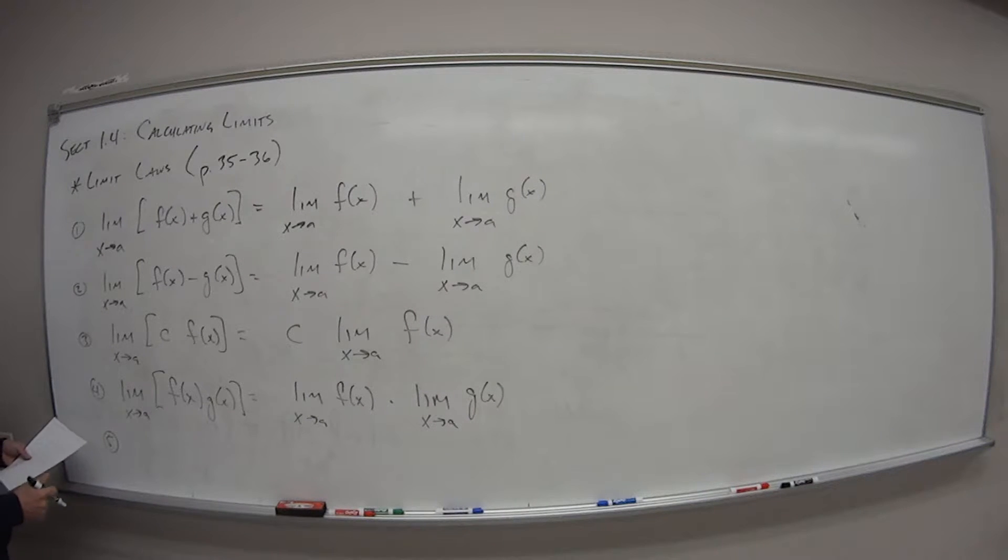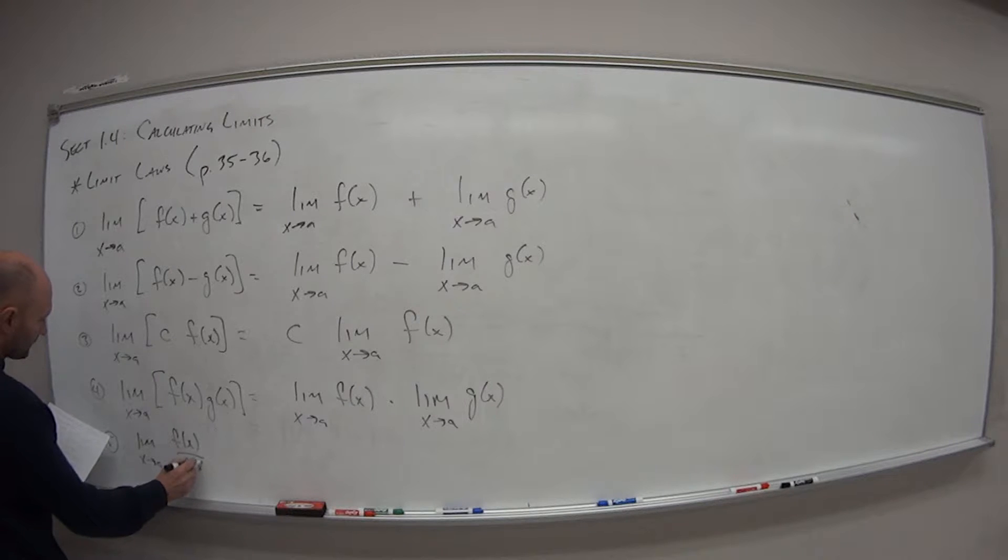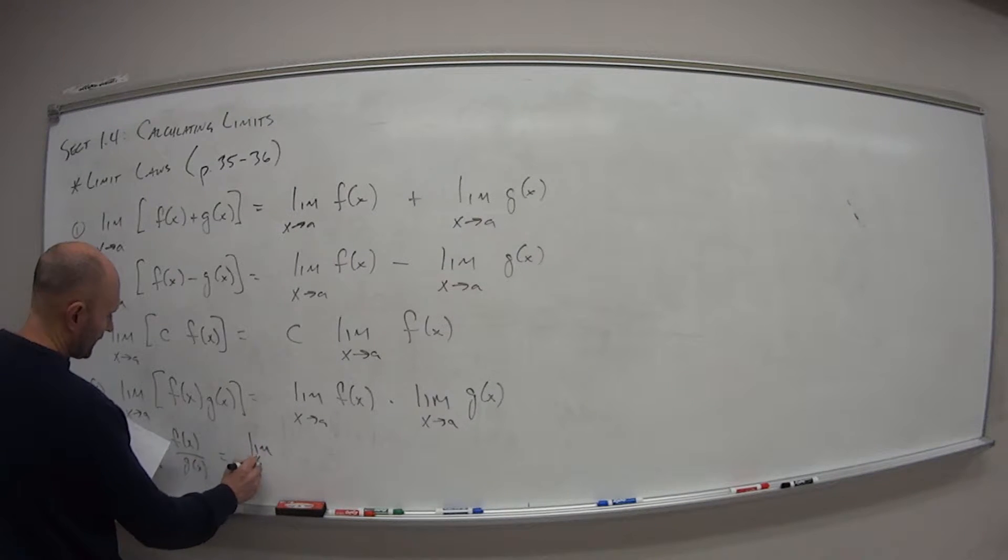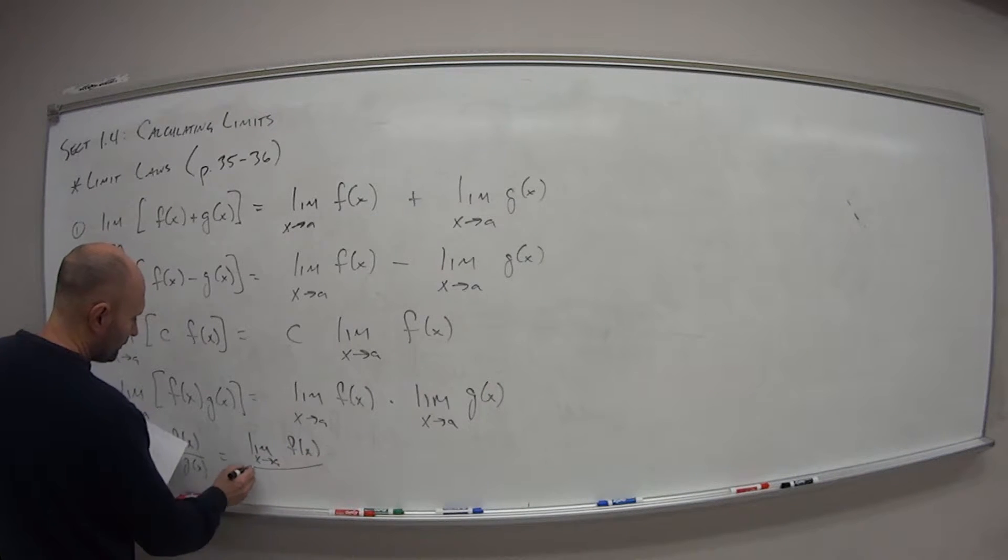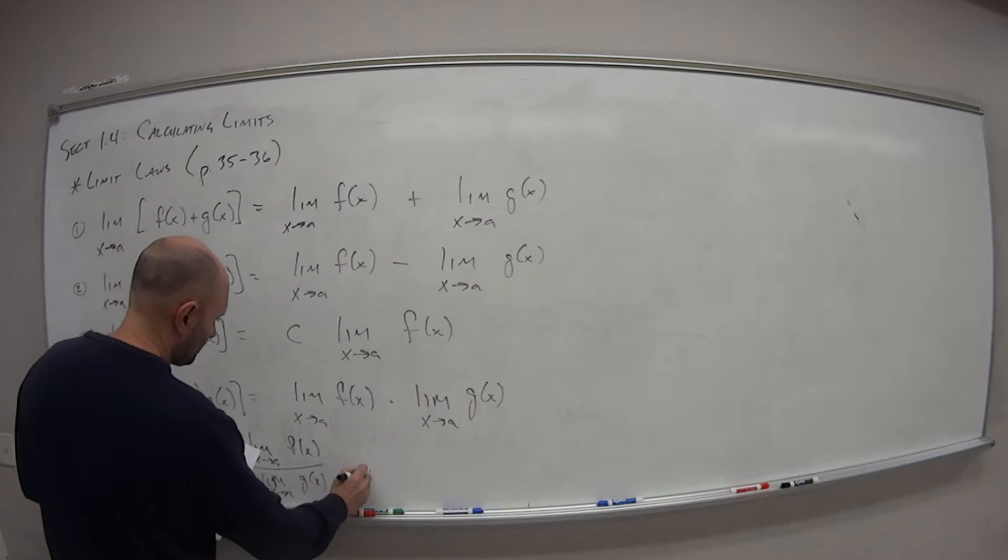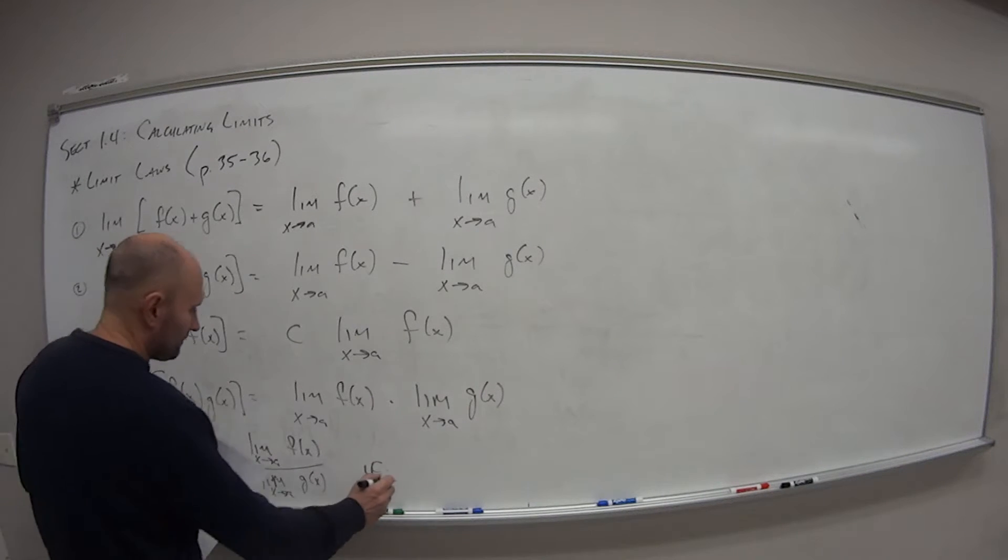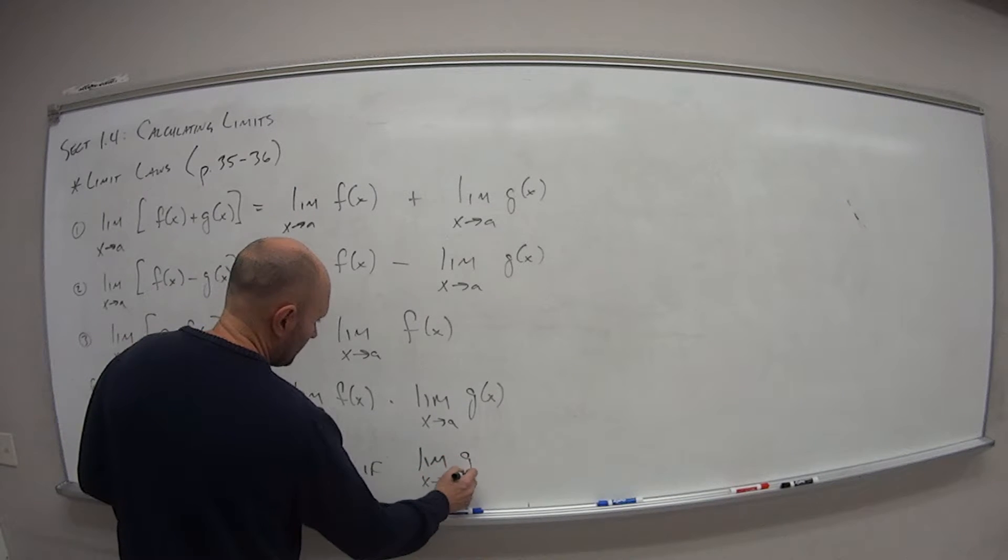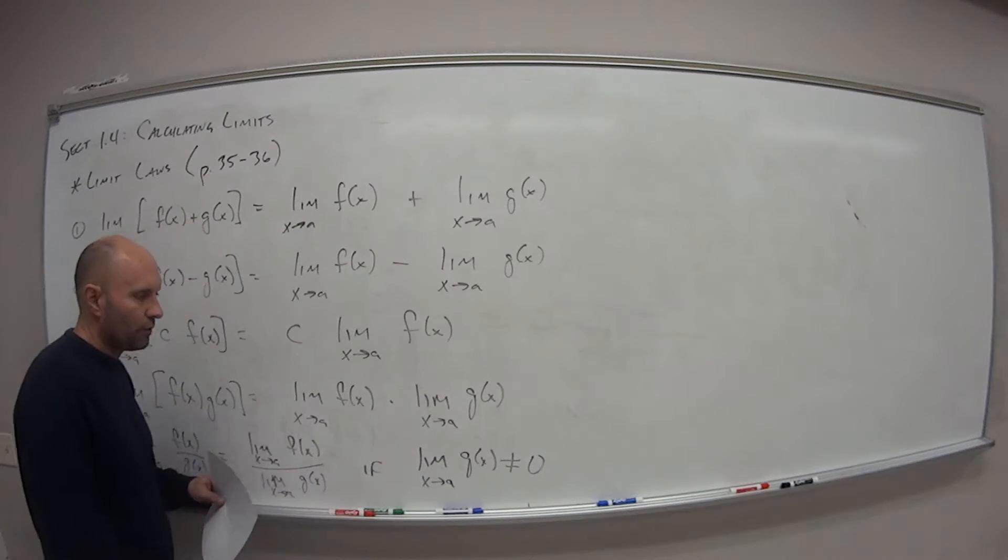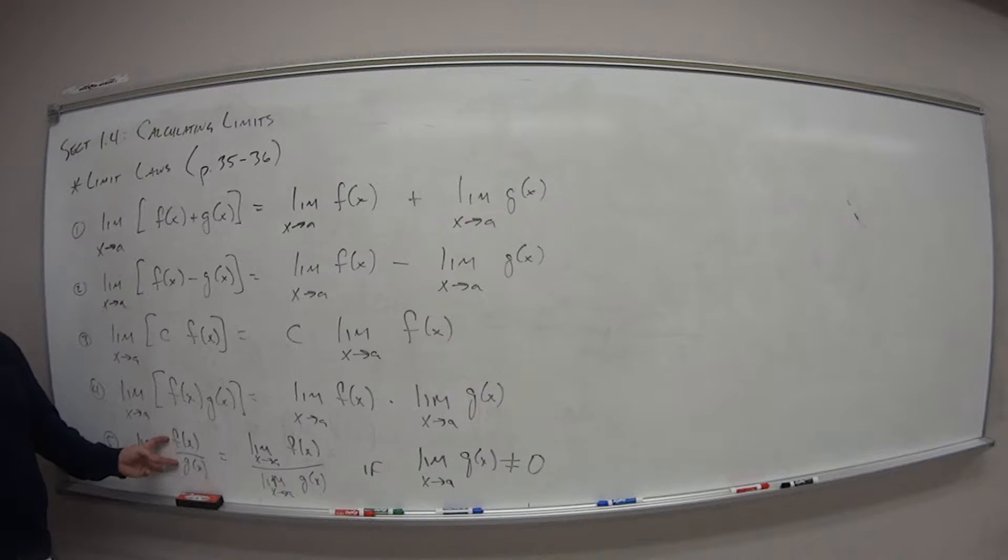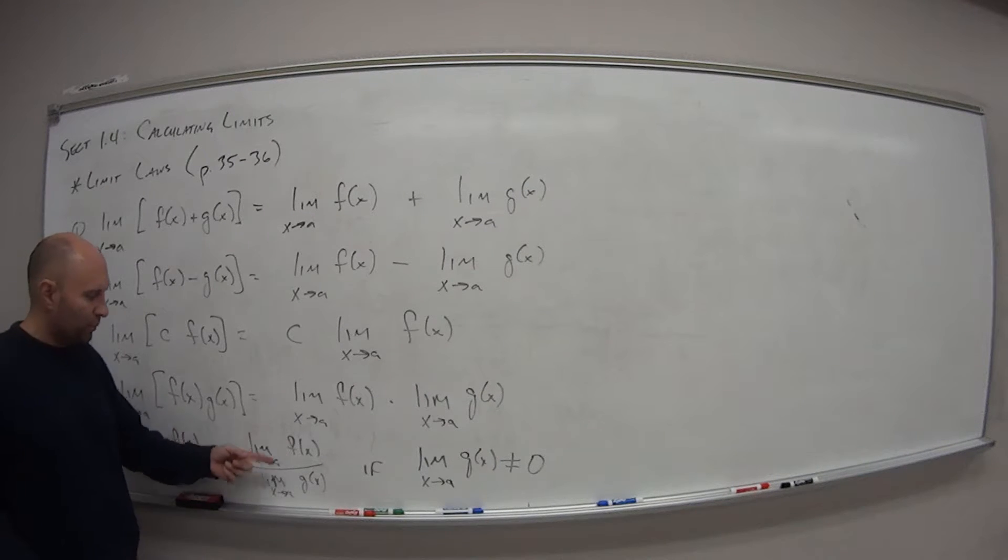Number five: division. So the limit as x approaches a of f(x) divided by g(x) is equal to the limit as x approaches a of f(x) over the limit as x approaches a of g(x), if the limit as x approaches a of g(x) is not equal to zero. So if we would have just divided these functions to begin with, it may have given us a value that as we approach a was okay. But if we break it apart, if the limit of g(x) is going to be zero, well, then we have a problem.